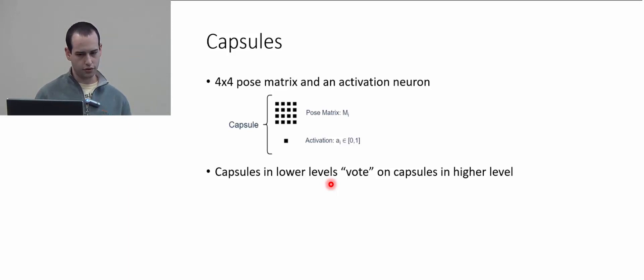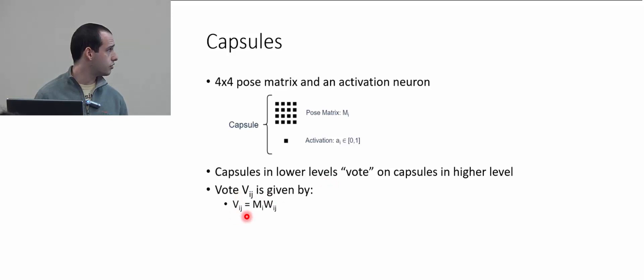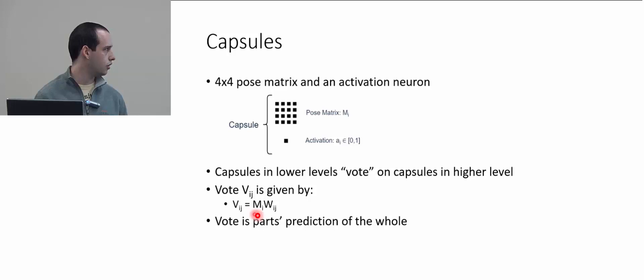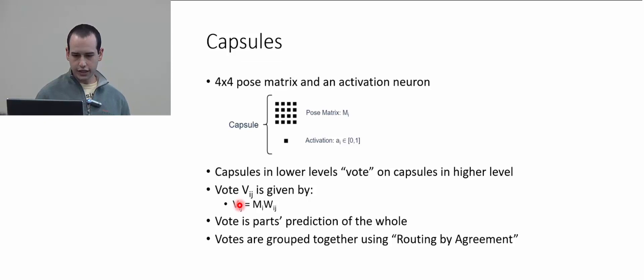Capsules at lower levels vote for capsules in higher levels. These votes are given by a transformation: M is the pose matrix, W_IJ is the set of learned weight matrices, and there's a matrix multiplication to get a vote. These votes are predictions from part to whole — lower-level capsules vote on what they believe the capsule in the next level would look like.